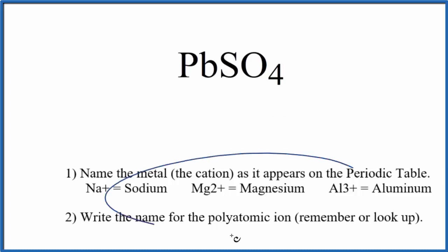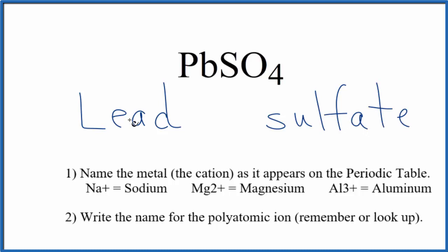With an ionic compound, we'll use these rules to write the name for PbSO4. First, we write the name for the metal—Pb is lead. Then we write the name for the polyatomic ion—SO4 is sulfate. Right now, we have the name lead sulfate for PbSO4.